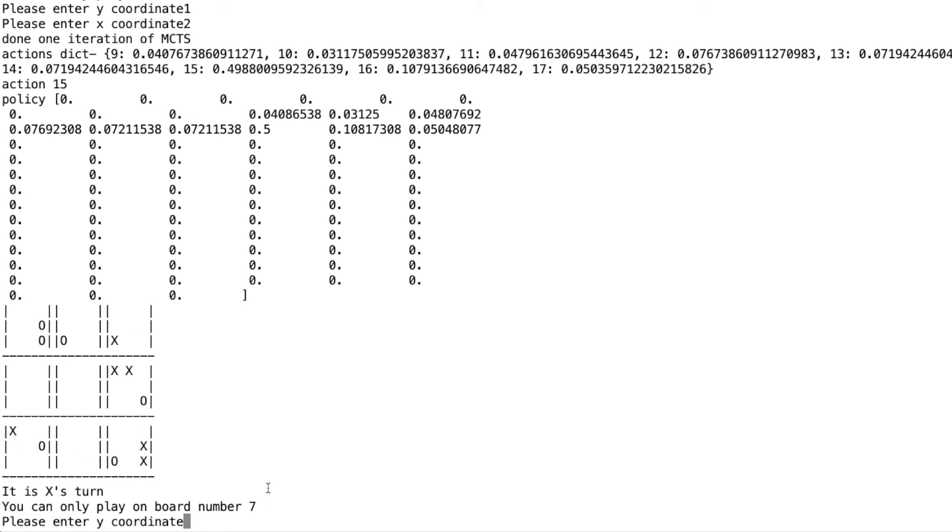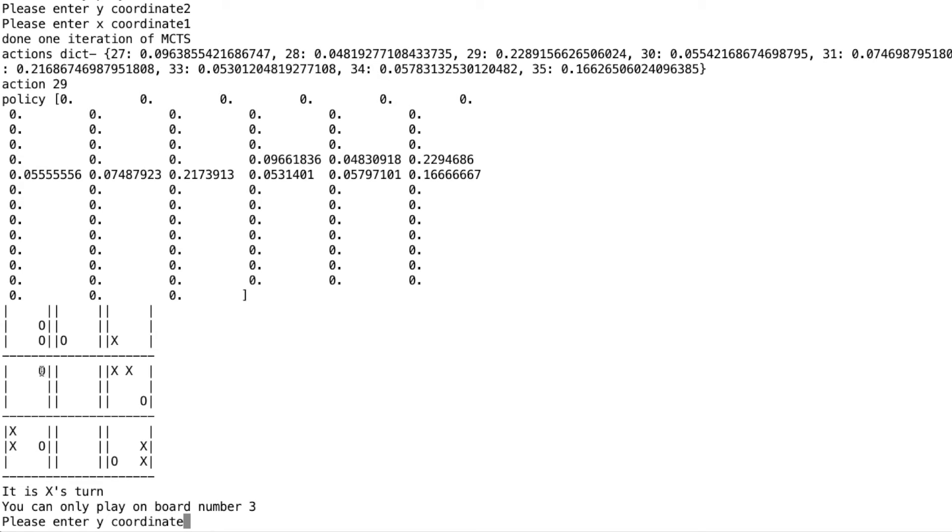So let's play on the middle left square. Then the algorithm chose to play on the top right square. And we can also look at the probabilities here. Again, these are numbered one, two, three, four, five, six, and so on. So it wasn't too confident of its decision here. In fact, it was also considering placing it in this square or in the very last square.